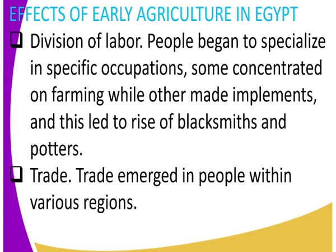Another effect of early agriculture in Egypt was that there was trade. Trade emerged among people within various regions. As there was enough food, people could sell the excess — that is how trade emerged.